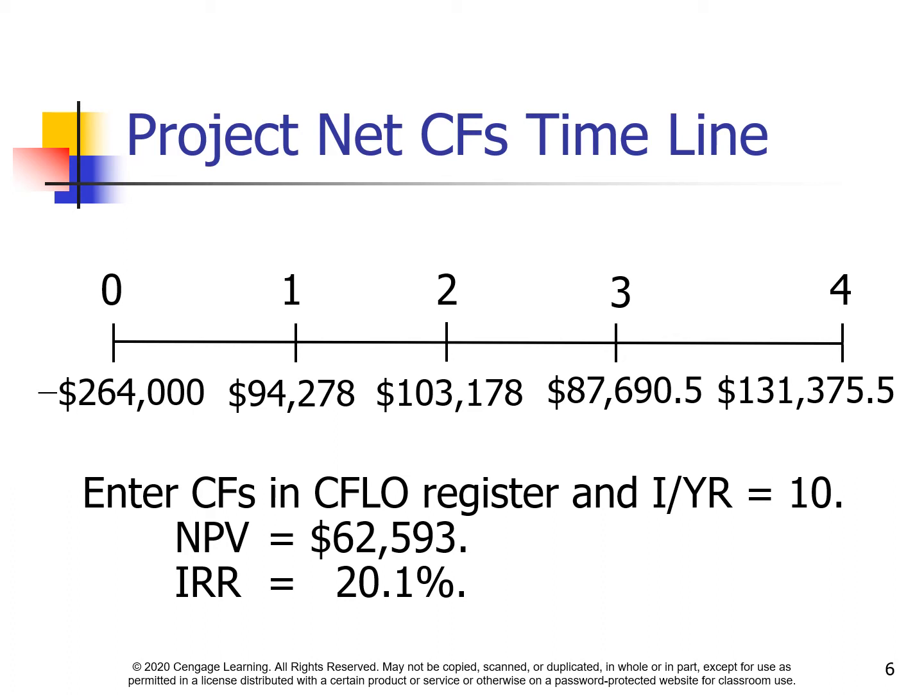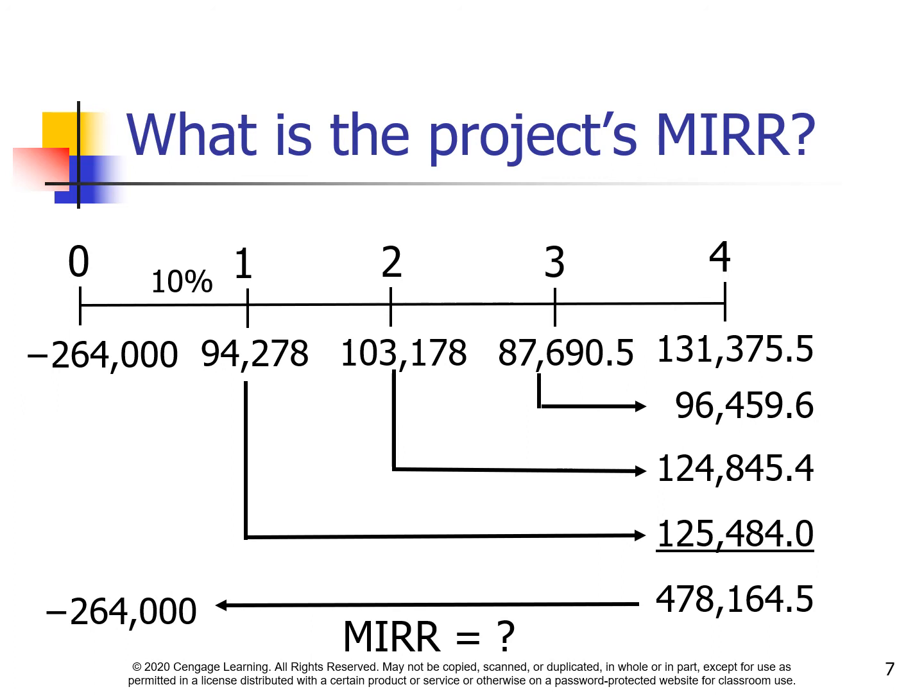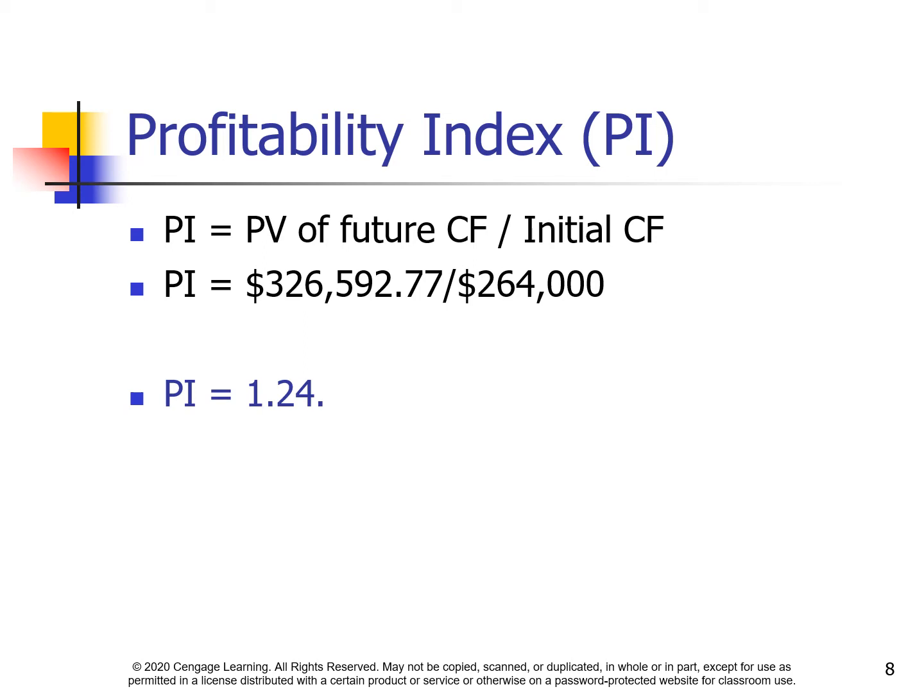Then we enter the cash flows in the CFLO register and apply a rate of return of 10%. We can calculate the net present value and internal rate of return. We can use the Excel function MIRR to calculate the modified internal rate of return for the project. Also, we can calculate the profitability index using the present value of future cash flows divided by the initial cash flow.